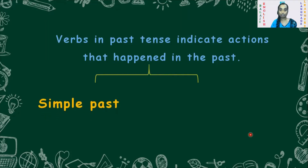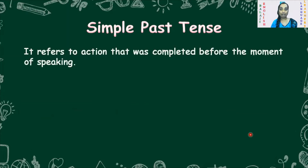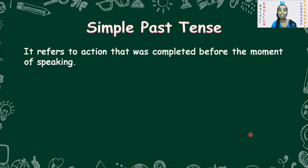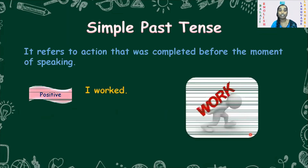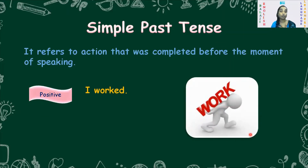What is simple past tense? Simple past tense refers to an action that was completed before the moment of speaking. Please make a note of it so that you can revise it later. In a positive sense: I worked, I smiled, I laughed, I wrote. All these come under the V2 form of verbs — this is the positive form.